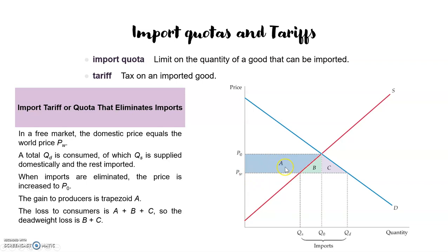But if the government decides to set an import quota or tariff that eliminates imports, the producer will go back to the initial price and earn gain A. So when imports are eliminated, the price will be P0, the gain to producers will be trapezoid A — they go back to the initial situation — and there is a loss to consumers equal to A, B, and C. They lose all what they had gained from the open market. So the deadweight loss will be B and C, only when the import quota or tariff completely eliminates imports, because we go back to Q0 exchanged at price P0.